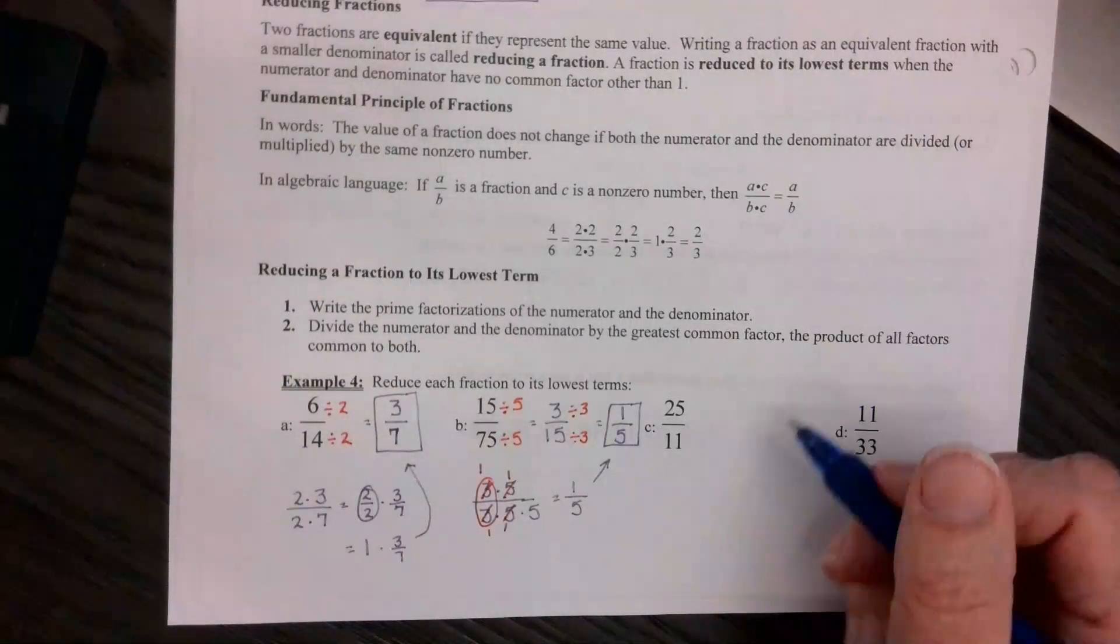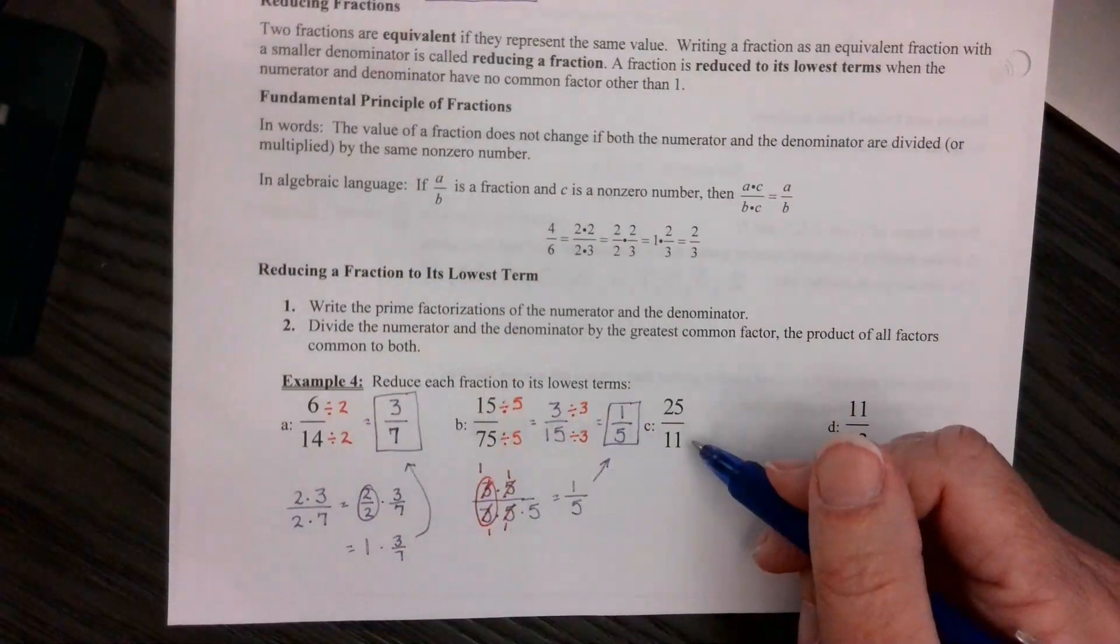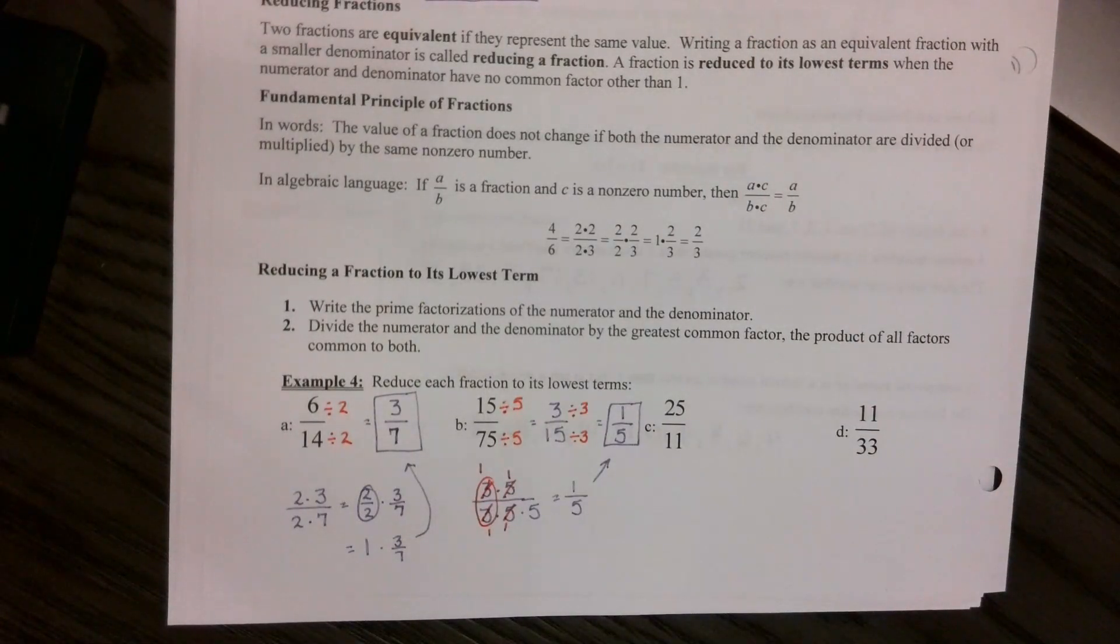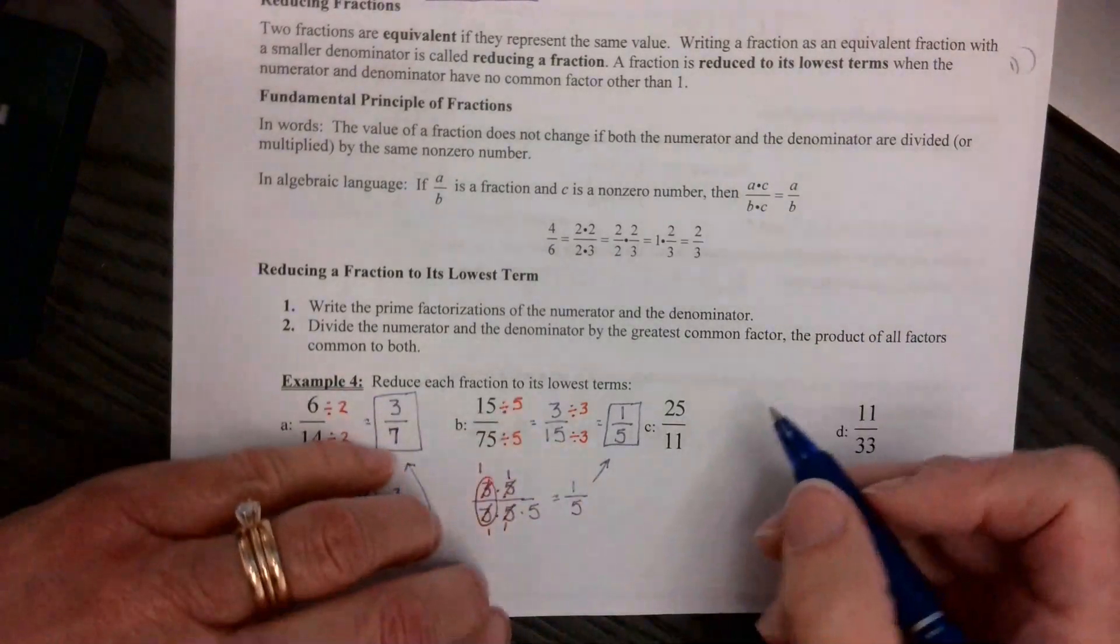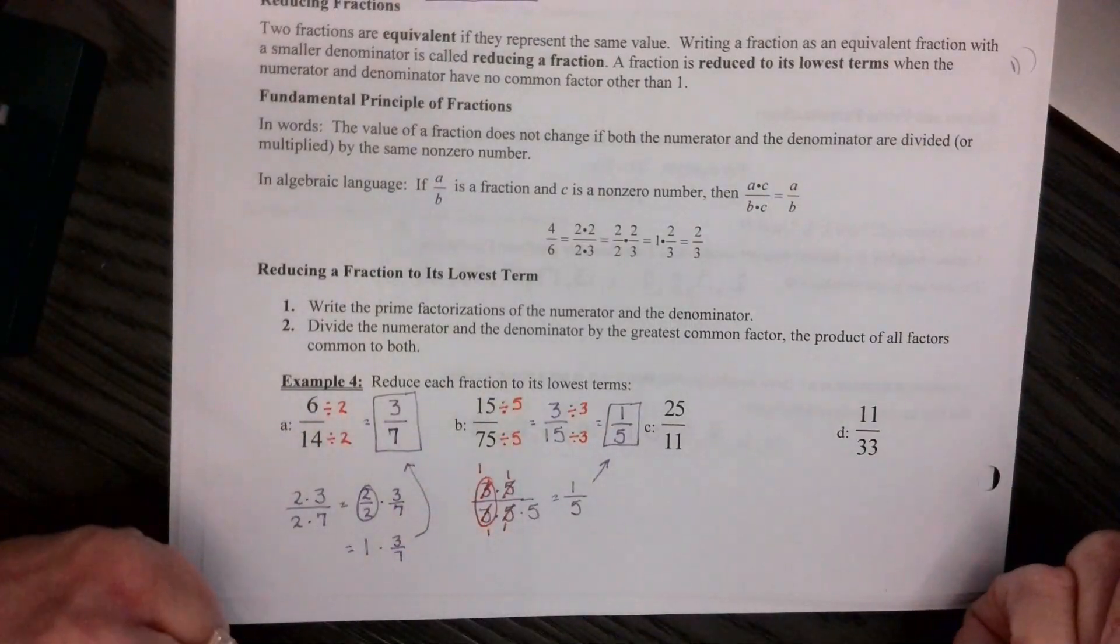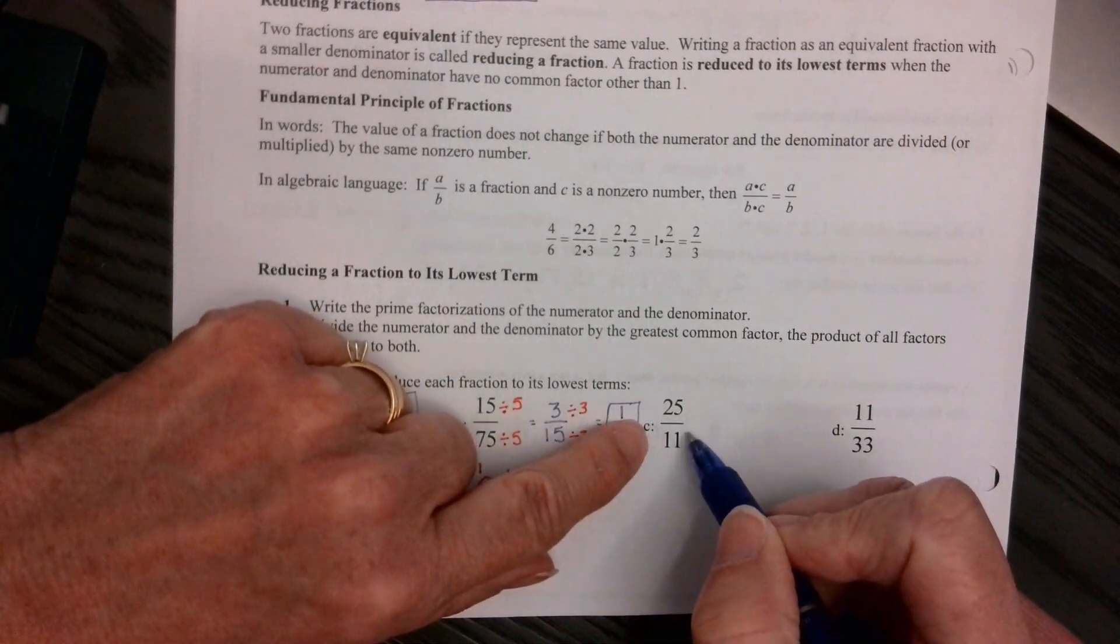All right, right here, it's an improper fraction. So for this chapter, after this chapter we won't have to, but it says reduce each fraction to its lowest term. So nothing will go into 25 that goes into 11 because they're both prime. So if we could leave our answer as an improper fraction, we'd just rewrite this.